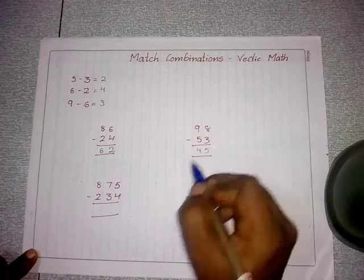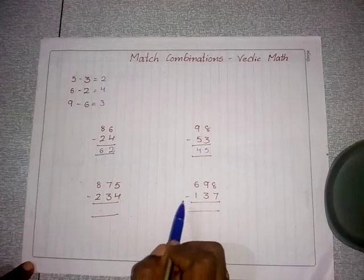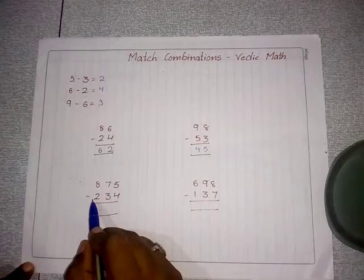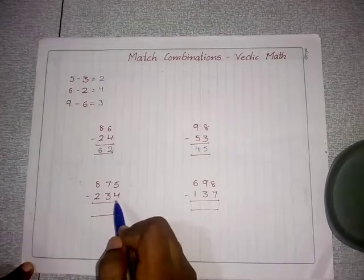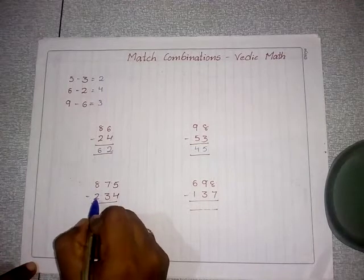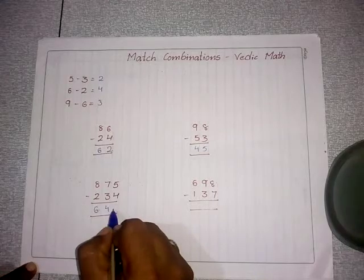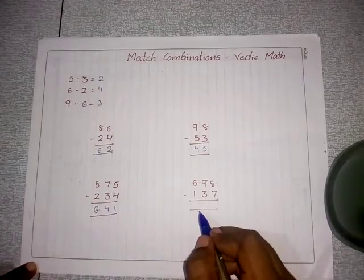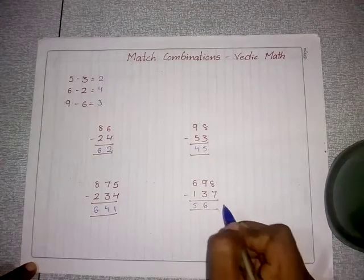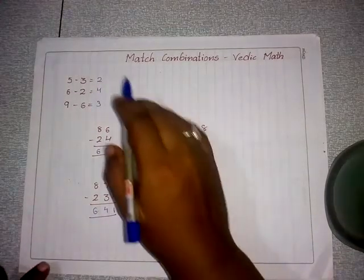For triple-digit match combinations, we also write the answer from left to right. Example: 875 minus 234 — 8 minus 2 is 6, 7 minus 3 is 4, 5 minus 4 is 1, giving 641. Another example: 698 minus 137 — 6 minus 1 is 5, 9 minus 3 is 6, 8 minus 7 is 1, giving 561.